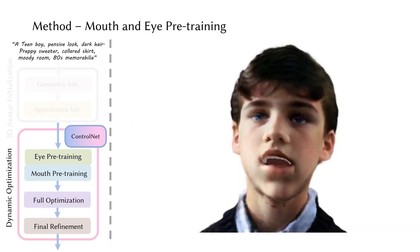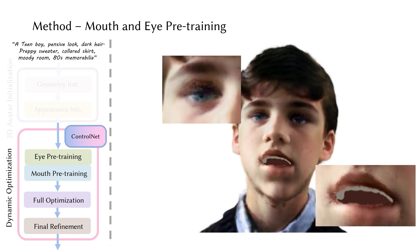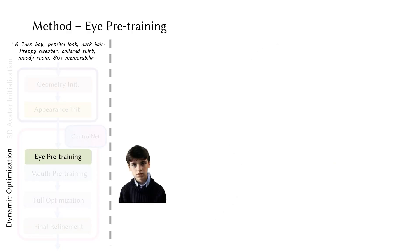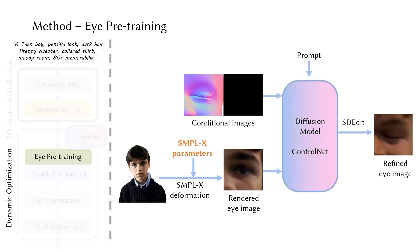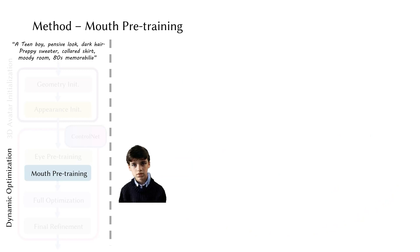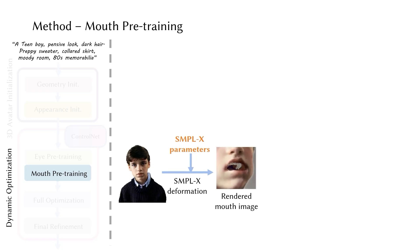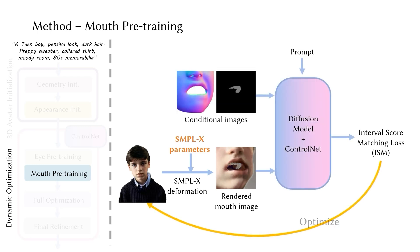The eyes and mouth interior are particularly challenging areas during animation, so we propose dedicated pre-training strategies for these regions. During eye pre-training, we randomly sample SMPLX parameters, render the eye image after SMPLX deformation, and use ControlNet to generate refined eye images to optimize the corresponding eye region. Unlike the eye region, the mouth interior is completely invisible during initialization with neutral expression, so we initialize it with a generic template and apply interval score matching to generate the interior mouth region from scratch.